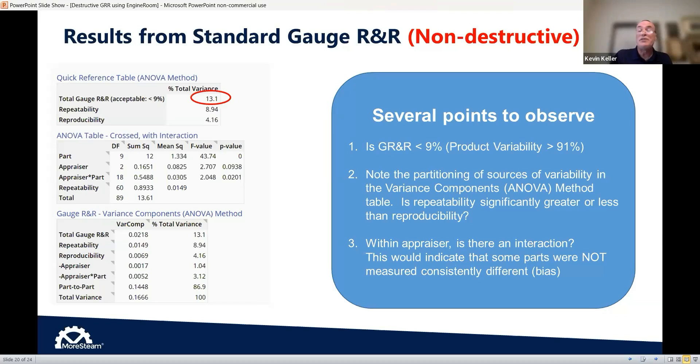And the first one is what's my total gauge R&R? Is it less than 9%? And in this case, it's 13.1. So I know it's close. It's close. So I'm going to see what might be contributing to that being as high as it is.